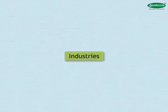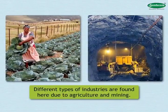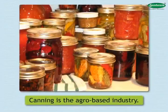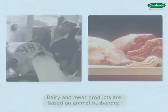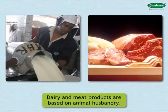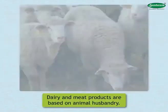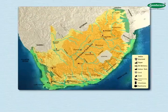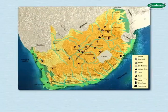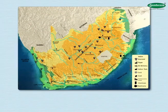Due to agriculture and mining, different types of industries are found here. Canning is the agro-based industry, while dairy and meat products industries are based on animal husbandry. Diamond cutting, manufacturing of machinery, paper, and chemicals are among the industries flourishing in the country.